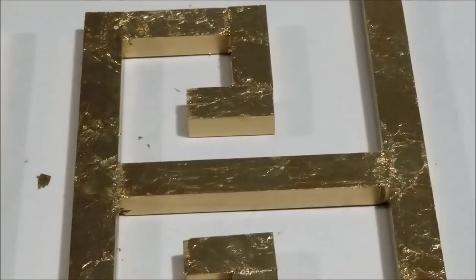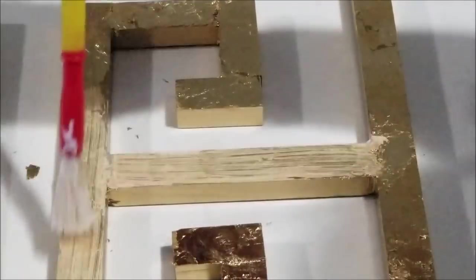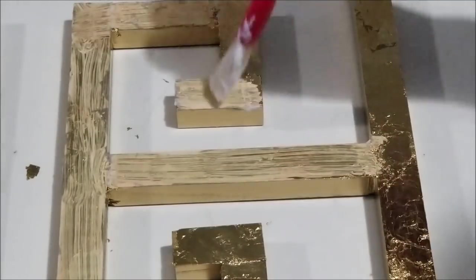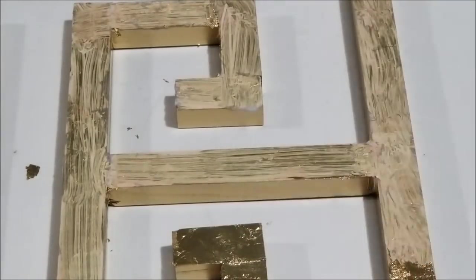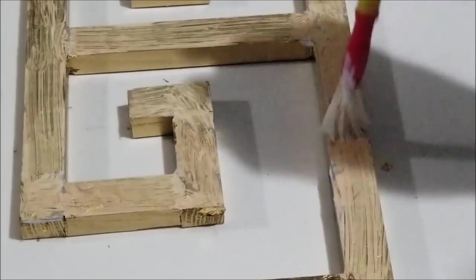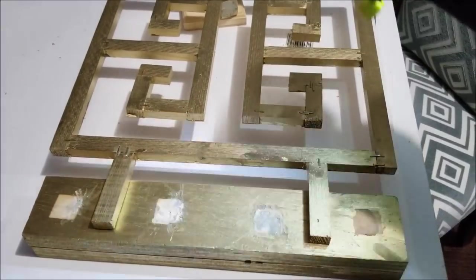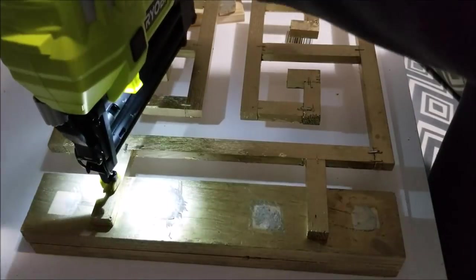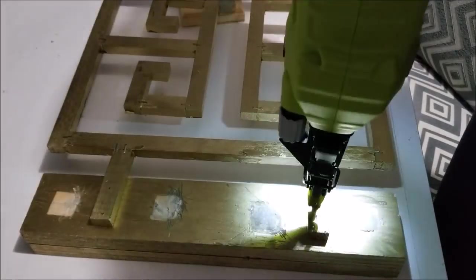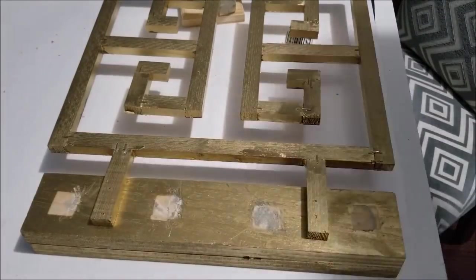So now I'm putting on the sealer and it goes on opaque but dries clear. This is what's gonna keep the leafing on the piece. Next I just nail the base on.